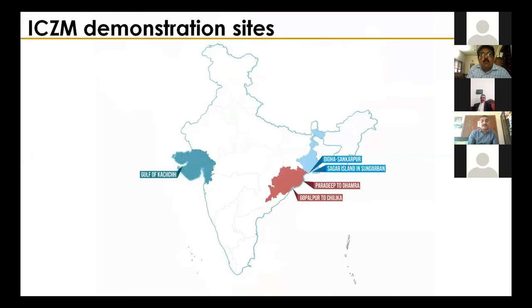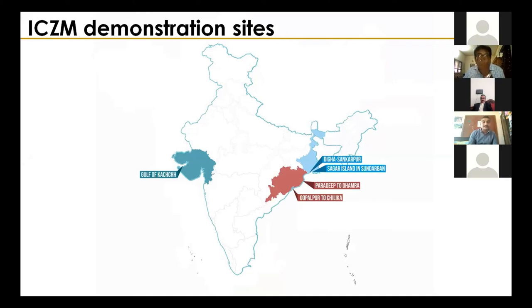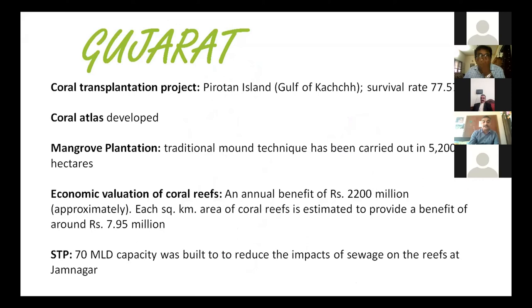At the state level, phase one of ICZMP covered three stretches: Gulf of Kutch in Gujarat; Digha-Shankarpur and Sagar Island stretch in West Bengal; and Paradip to Dhamara and Gopalpur to Chilika in Odisha. I will highlight the conservation success stories from this project, which ran from 2010-11 to June 2020 when phase one concluded.